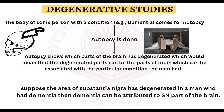After the person dies, an autopsy is done on their brain, and they observe which parts of the brain are degenerated. The conclusion drawn is that the degenerated parts are the areas responsible for the condition. For example, if a person had dementia and after death the autopsy shows that the substantia nigra is completely degenerated, that would mean dementia can be attributed to that brain structure.